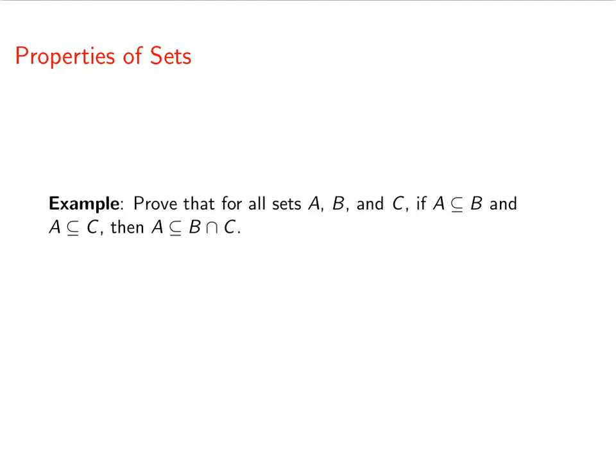Hello discrete math fans. Let's prove that for all sets A, B, and C, if A is a subset of B and A is a subset of C, then A is a subset of B intersect C.